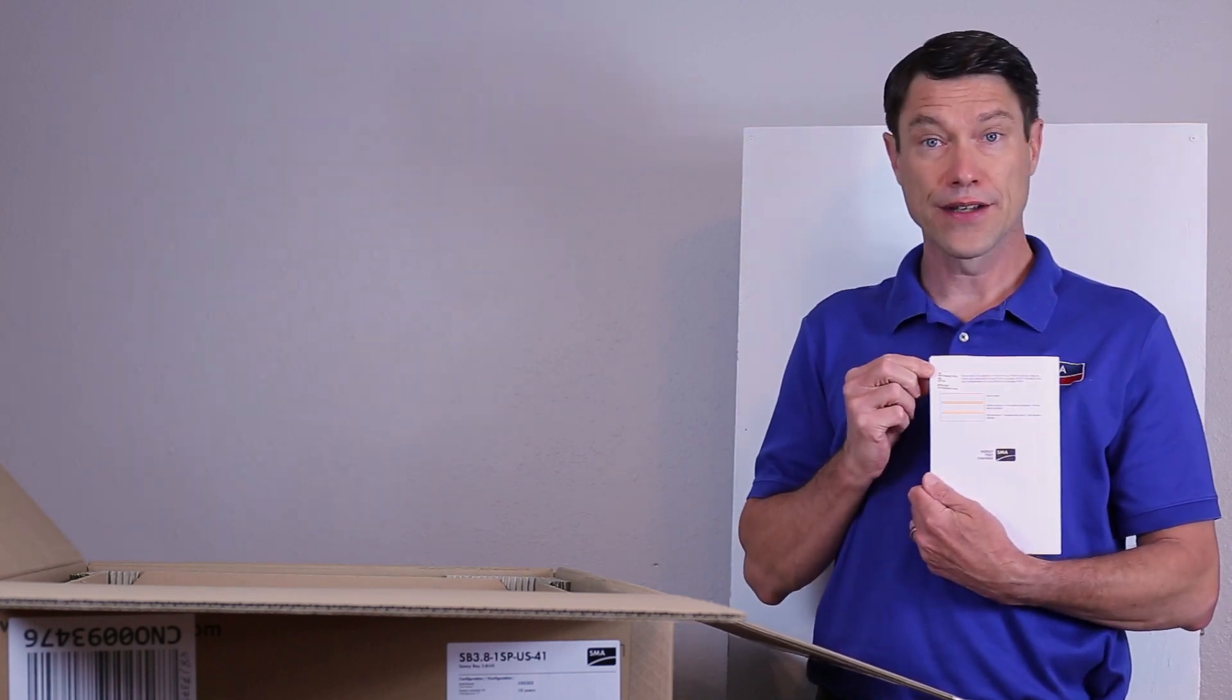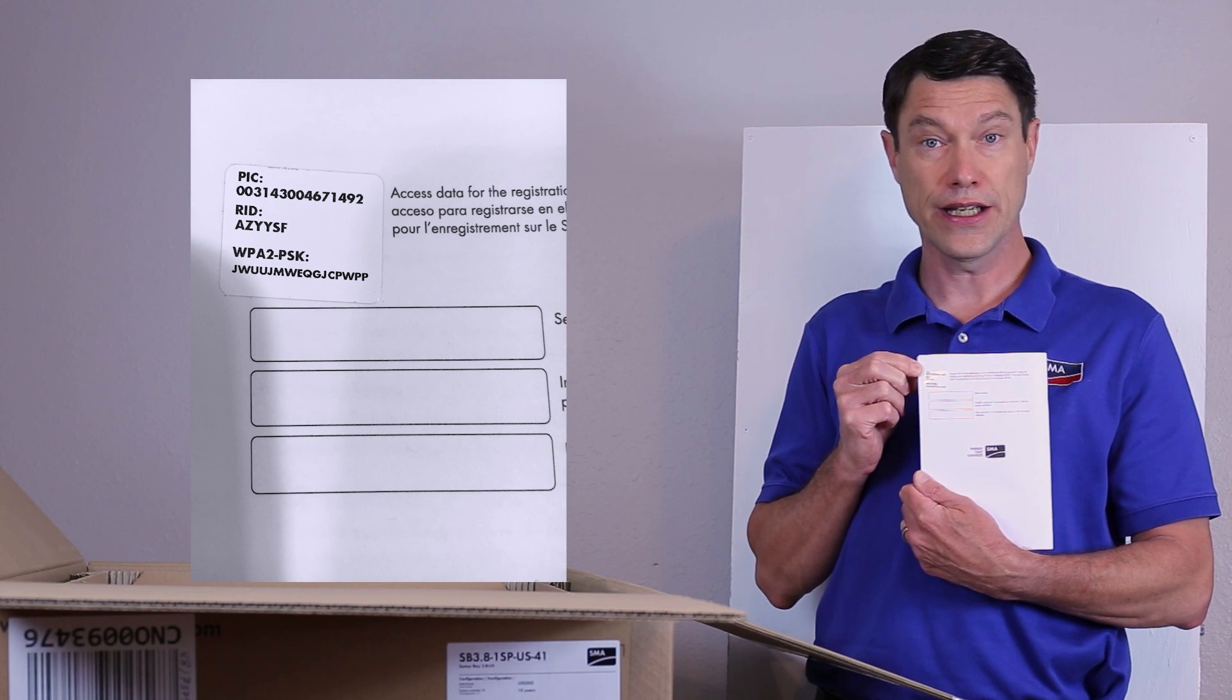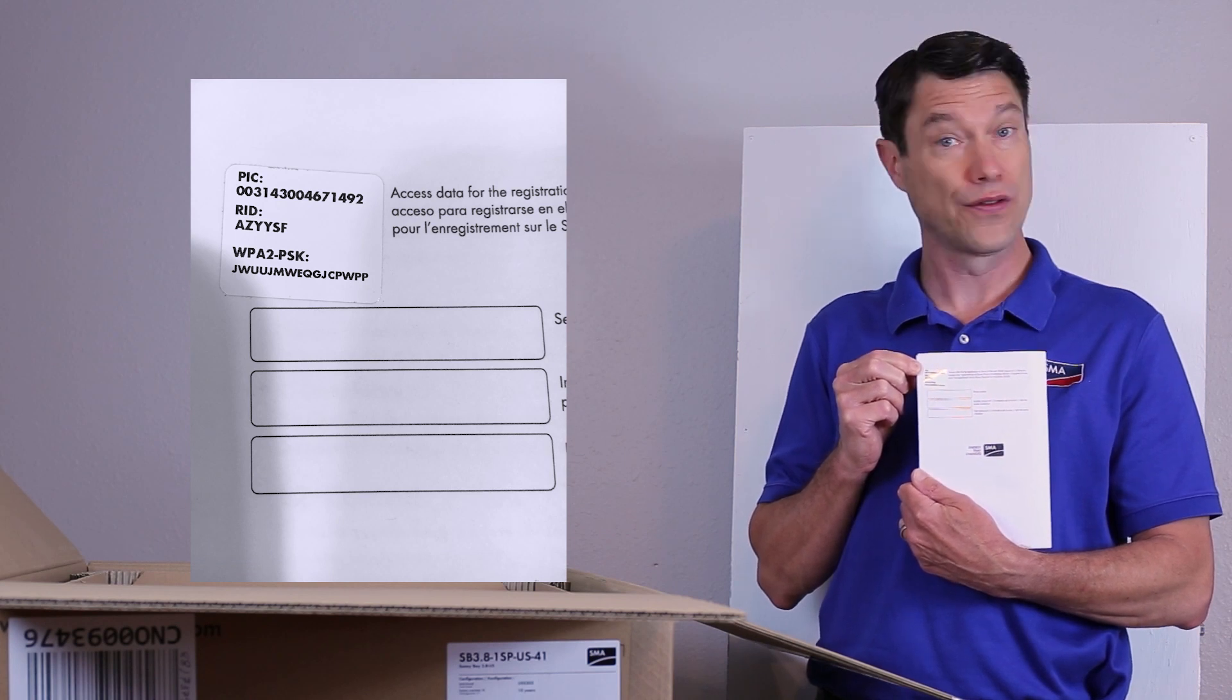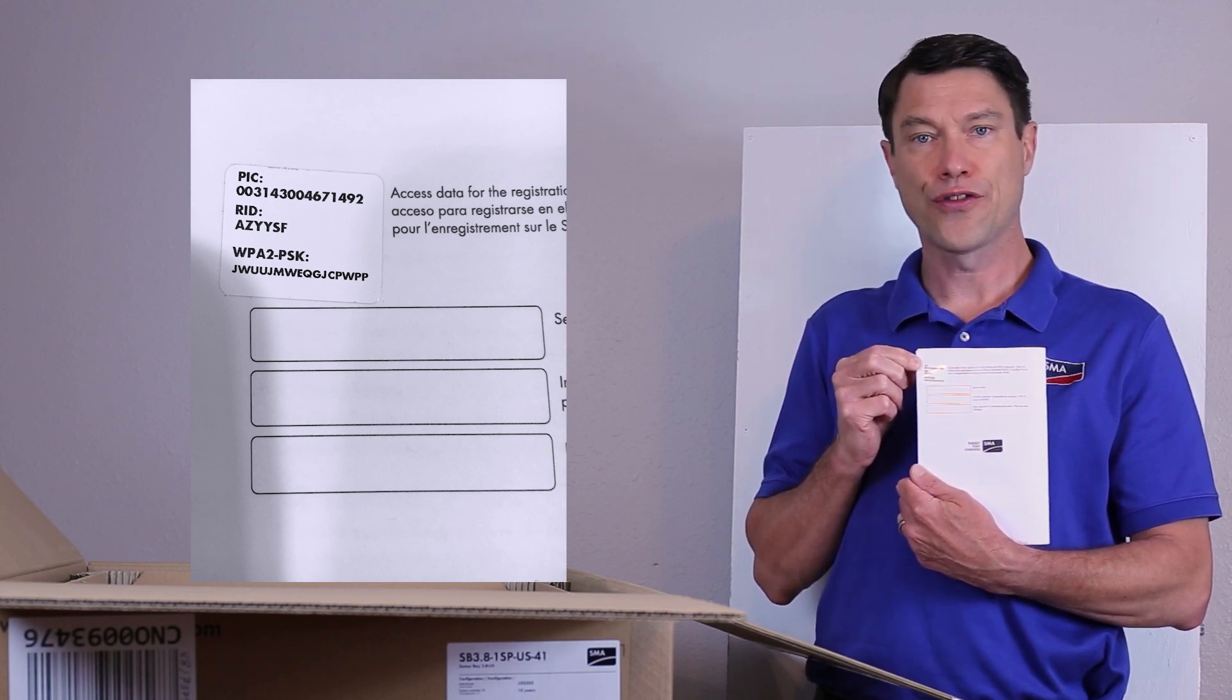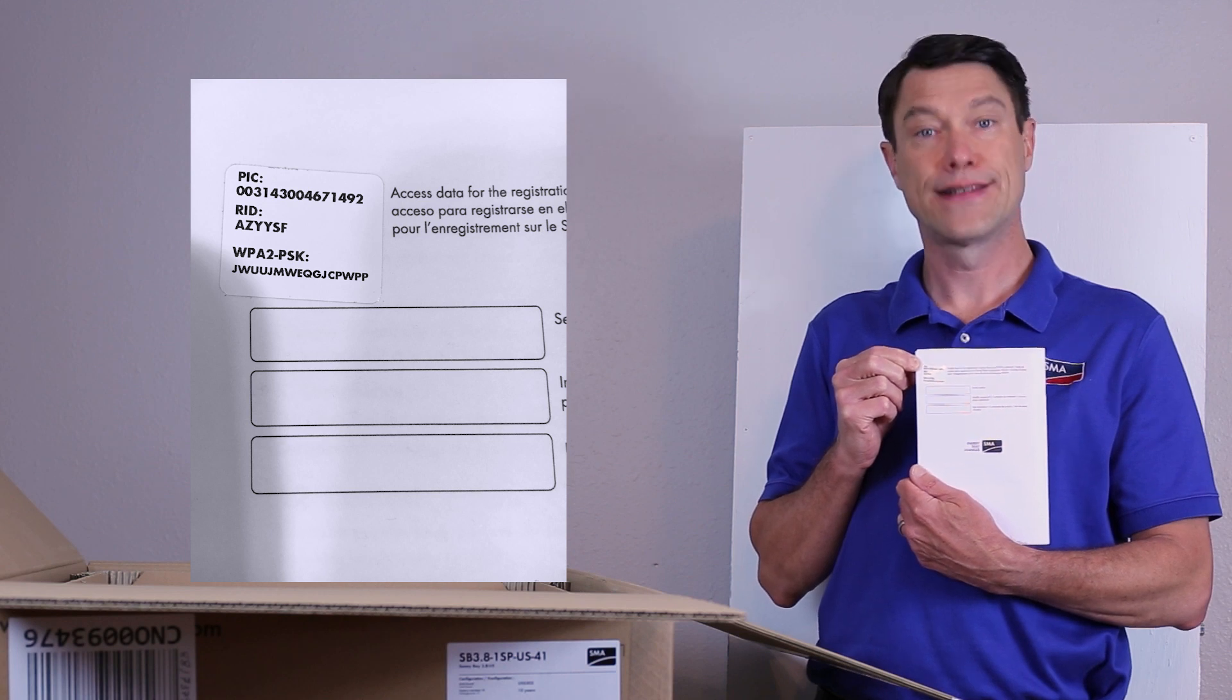Please note that on the back of the installation manual, there is a sticker that has the PIC and RID codes that will be used to register the device on Sunny Portal, as well as the final 16-digit code for the inverter's self-hosted Wi-Fi.